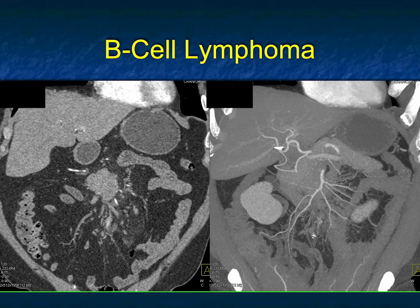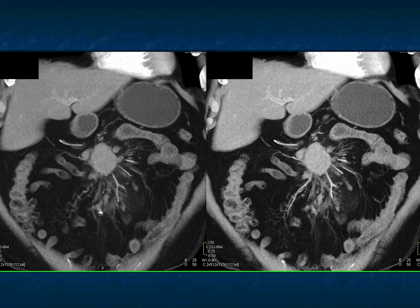Carcinoid is a great thought, sclerosing mesenteritis I don't favor for this one, and lymphoma is a great thought given the adenopathy. This was indeed a lymphoma. A few more images showed a little bit of a desmoplastic reaction, but the additional nodes are probably what's most helpful in reaching the right diagnosis.